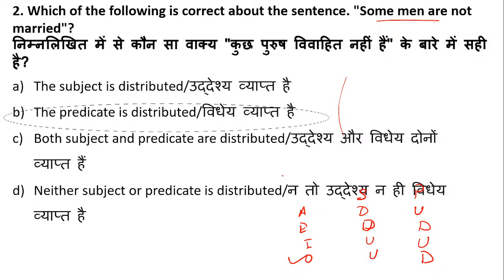The sentence 'Some men are not married' is an O type sentence. So here, your subject is undistributed and the predicate is distributed. Remember this table for the exam — questions will come directly from it.